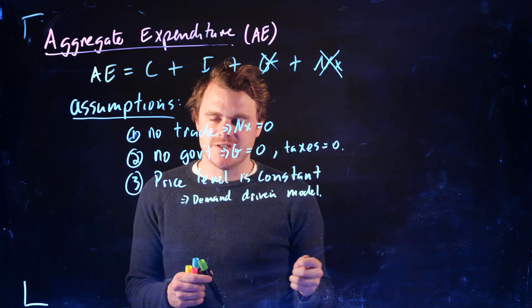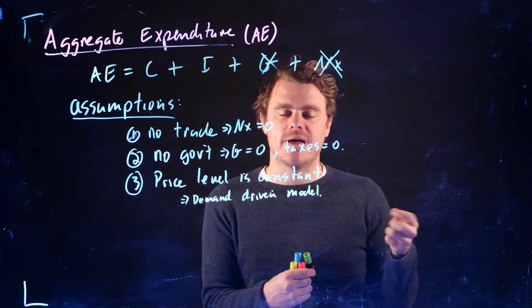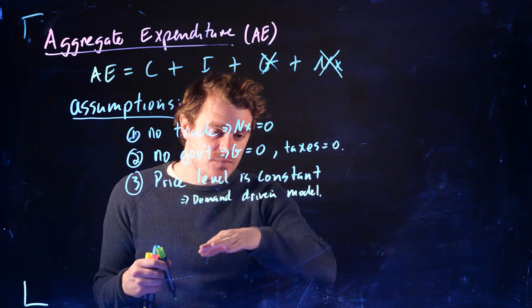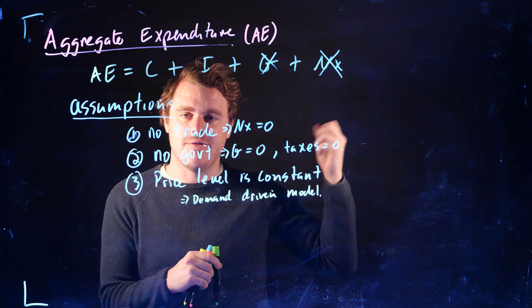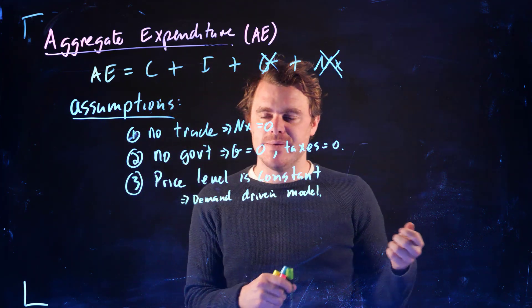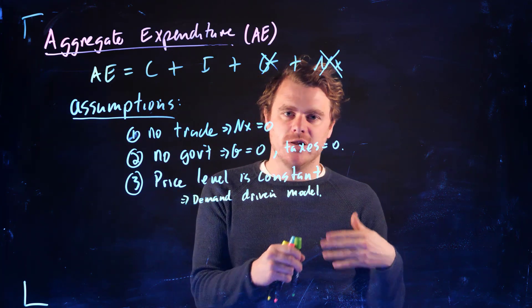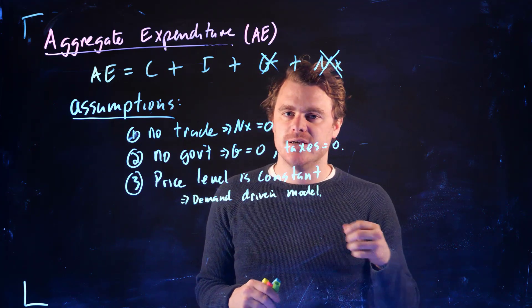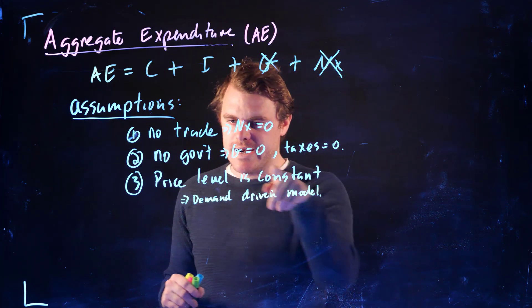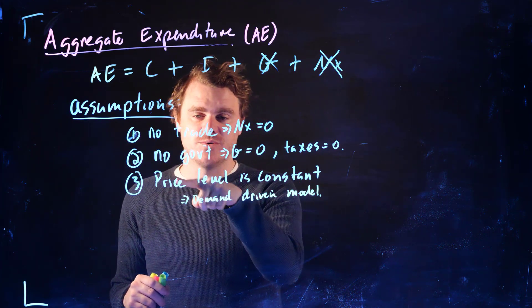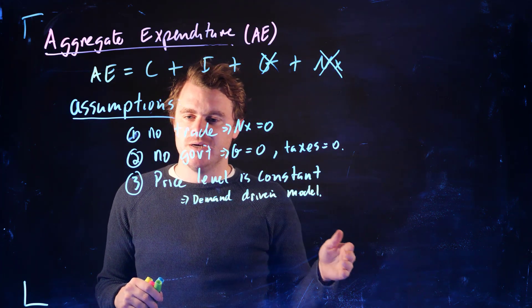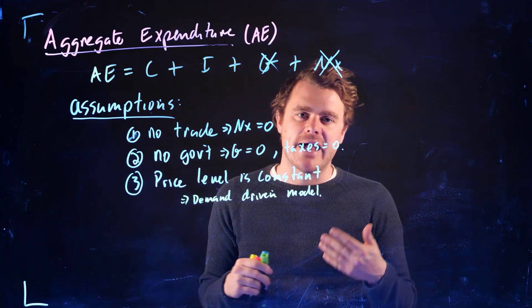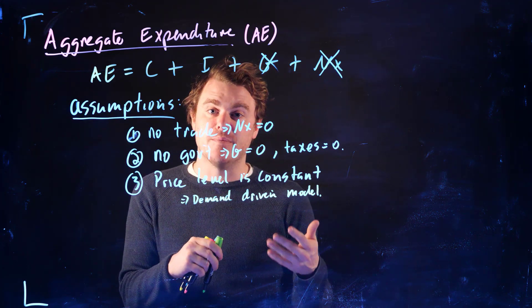We're essentially assuming that firms can just produce more without having to raise the price of their goods, which is probably not a great assumption. And so it's a demand-driven model. We're shutting down the supply side of the economy in that sense. So if you see demand-driven model in any questions, it's going to talk about what we're doing this week and a little bit next week. We're going to add price levels in in a couple modules in the future, and we can start to see inflation and price level changes. That's going to be a much more accurate description of what the economy might look like.